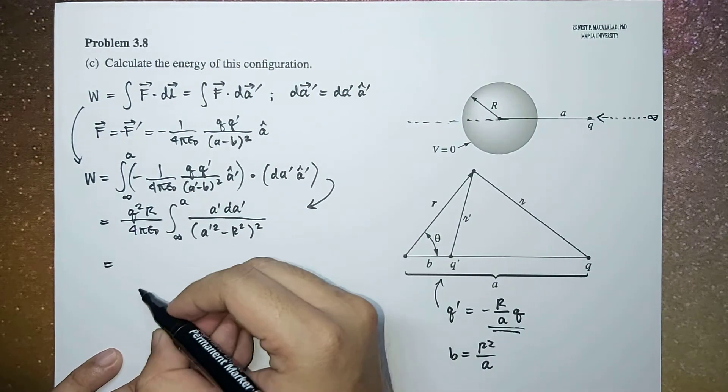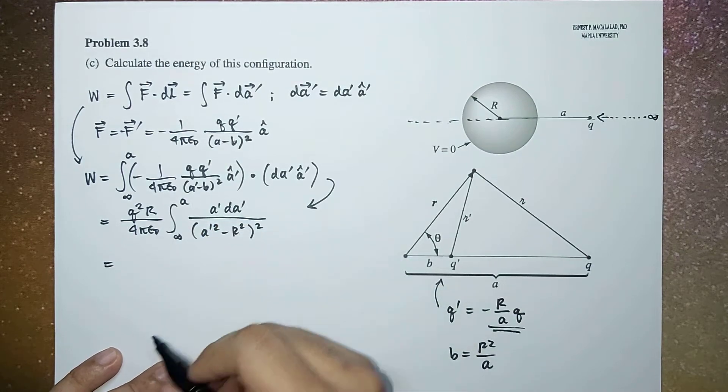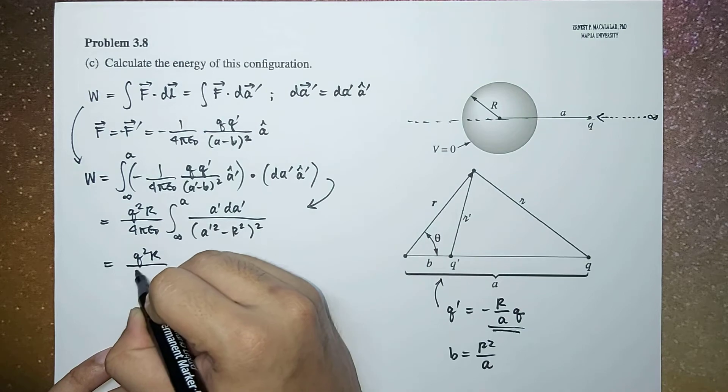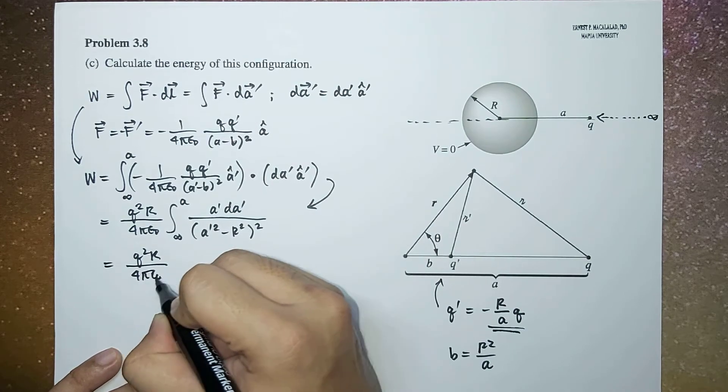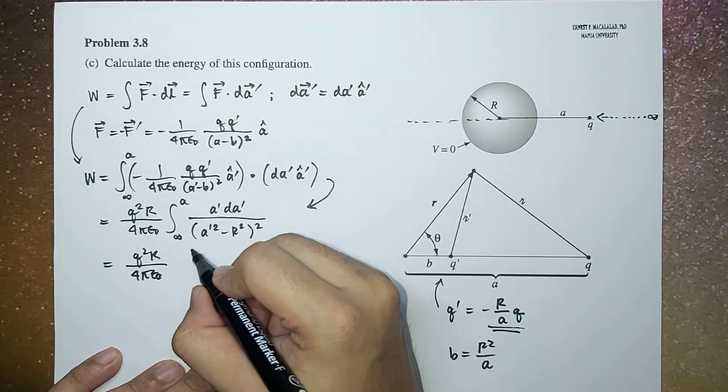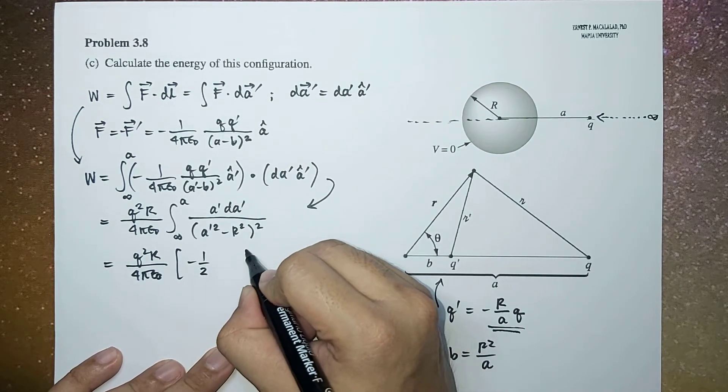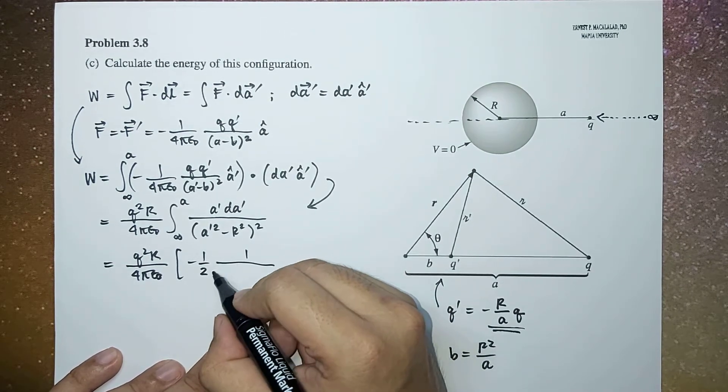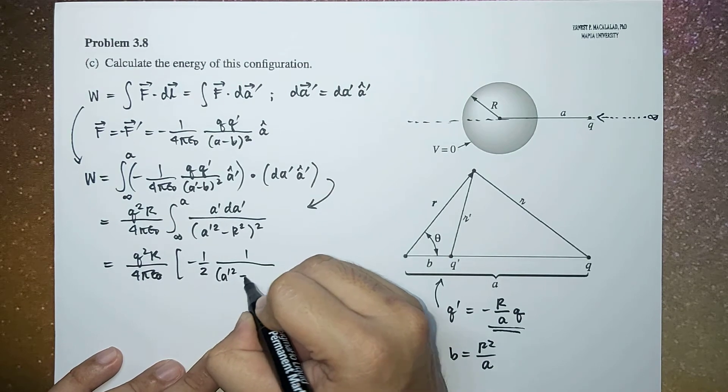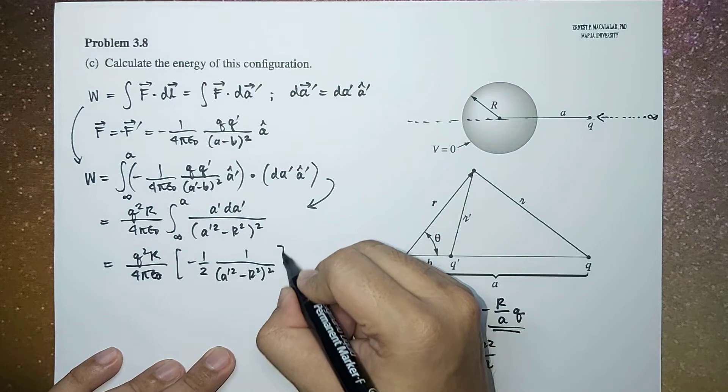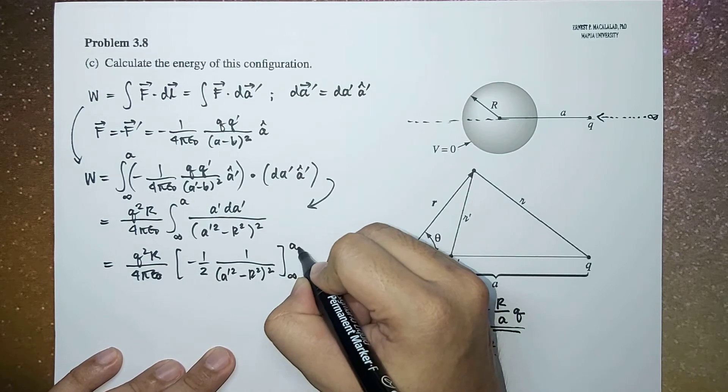So this will now be equal to—making this integral—we now have q squared r over 4 pi epsilon naught times negative one-half times 1 over (a prime squared minus r squared) squared, evaluated from infinity to a.